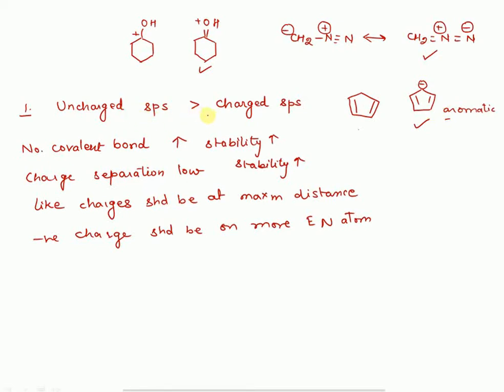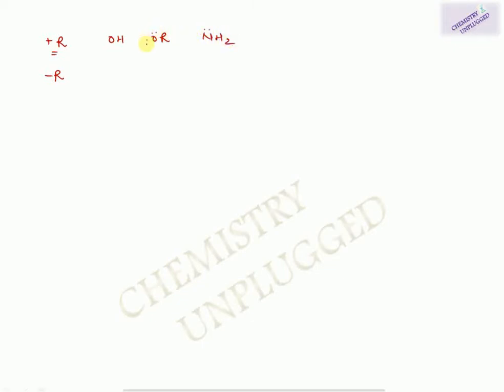Now let's discuss plus R and minus R effect. Plus R effect is when a lone pair of electrons is donated by a group into the system. Groups like –OH or –NH₂, which have a lone pair of electrons on the connecting atom, will show plus R effect.